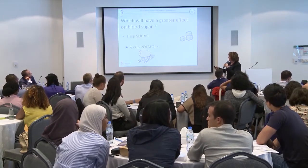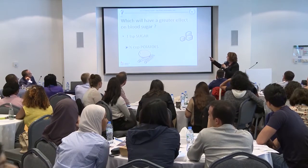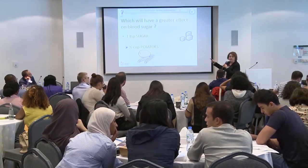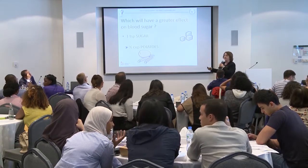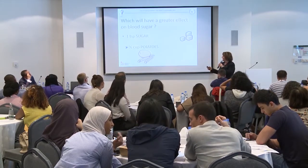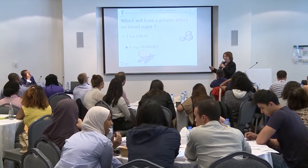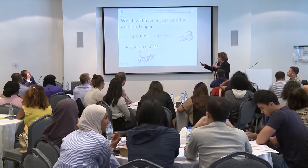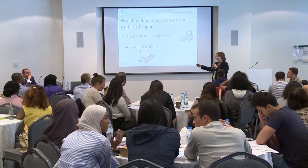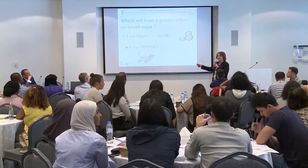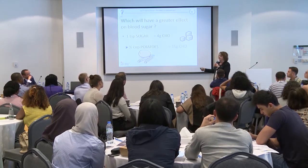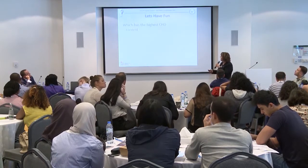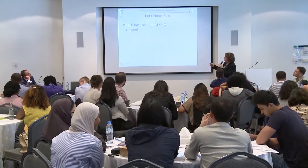Which will have a greater effect on your blood sugar: one teaspoon of sugar or potatoes? One teaspoon of sugar contains just 4 grams of carbohydrates, whereas a small potato or small apple contains 15 grams — that's one carbohydrate exchange. So potatoes have the higher carbohydrate content.